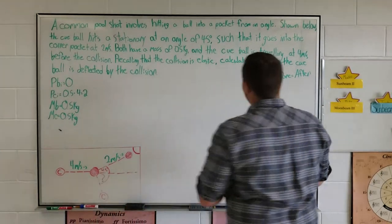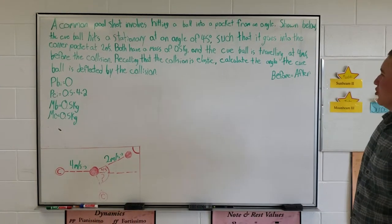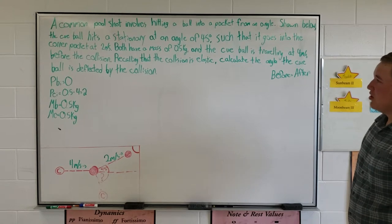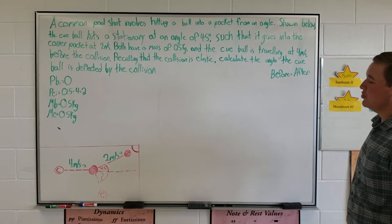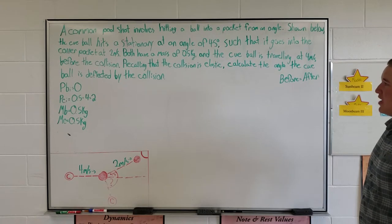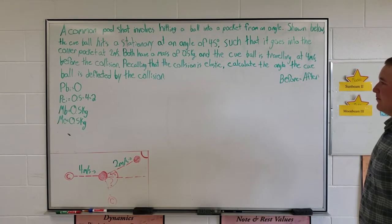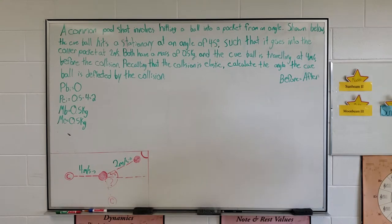A common pool shot problem: a cue ball hitting a ball into a pocket from an angle. The cue ball hits a stationary ball at an angle of 45 degrees such that it goes into a corner pocket at 2 meters per second. Both balls have a mass of 0.5 kilograms, and the cue ball is traveling at 4.4 meters per second before the collision. Recalling that the collision is elastic, calculate the angle the cue ball is deflected by the collision.